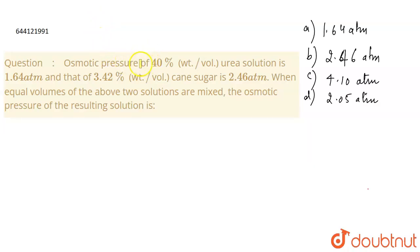The question is osmotic pressure of 40% weight by volume urea solution is 1.64 atm and that of 3.42% cane sugar is 2.46 atm. When equal volumes of the above two solutions are mixed, the osmotic pressure of the resulting solution is?